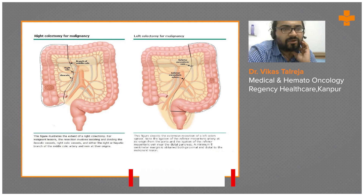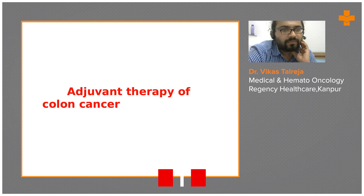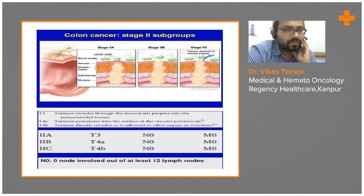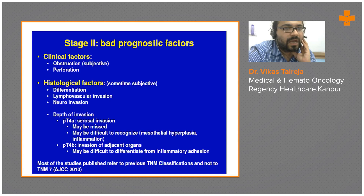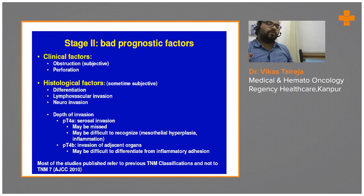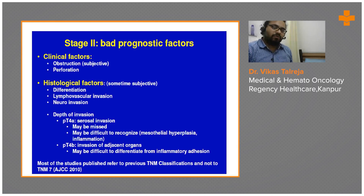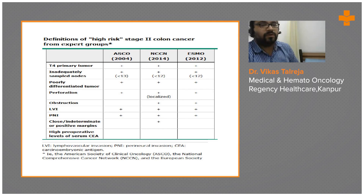Regarding adjuvant therapy: in Stage 1 there is no adjuvant therapy indicated. In Stage 2, certain subgroups require adjuvant therapy based on lymph node status and prognostic factors such as whether obstruction or perforation was present upfront, degree of differentiation, presence of lymphovascular invasion, neural invasion, depth of invasion (T4a or T4b). Most of these patients are prescribed adjuvant chemotherapy.